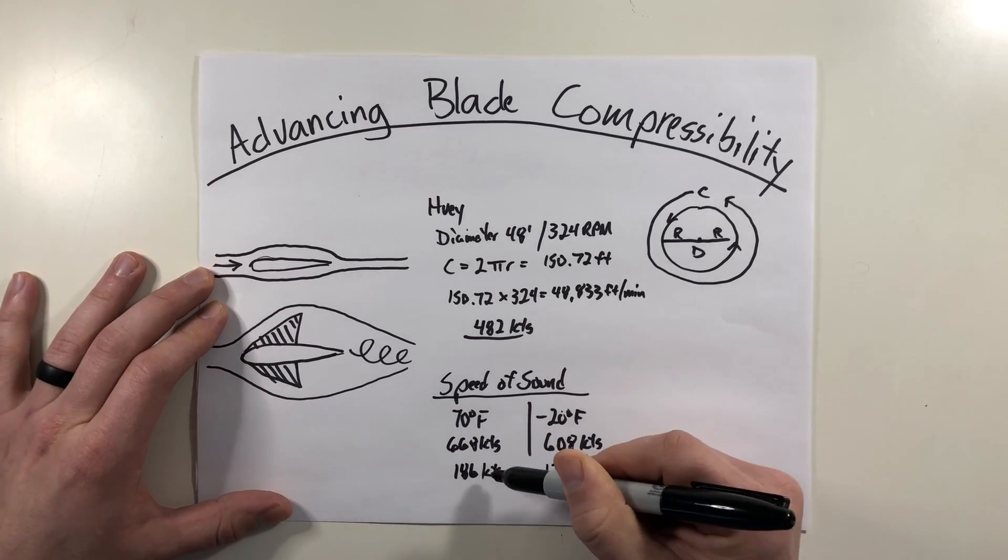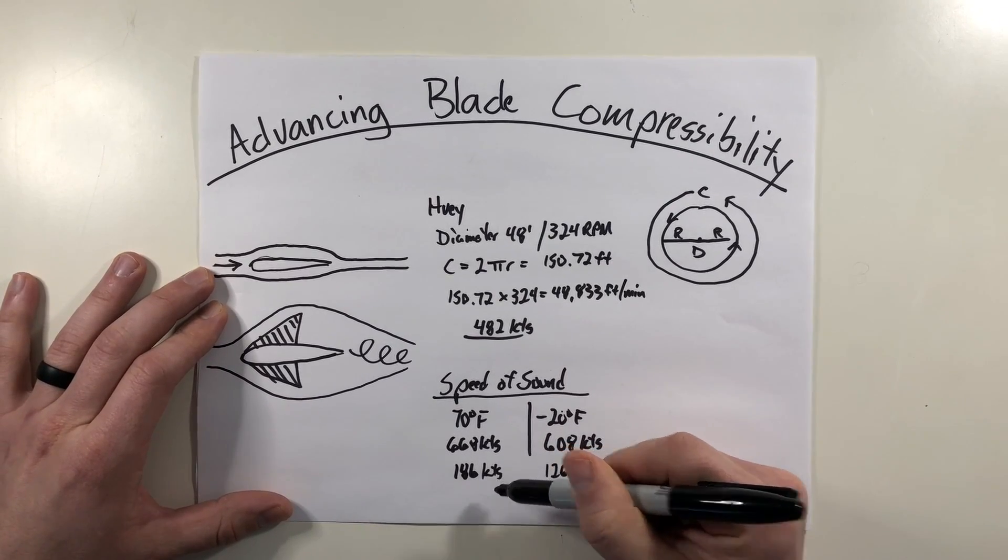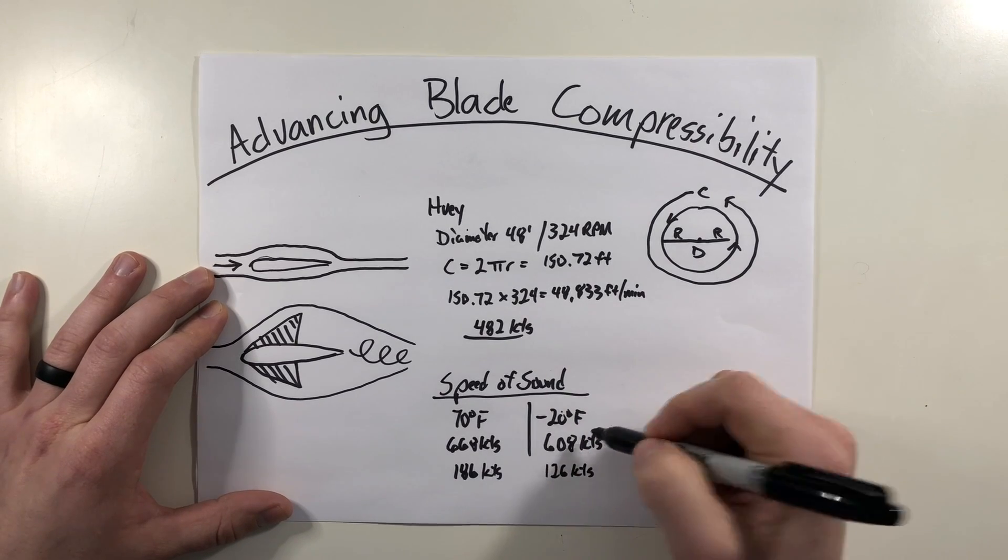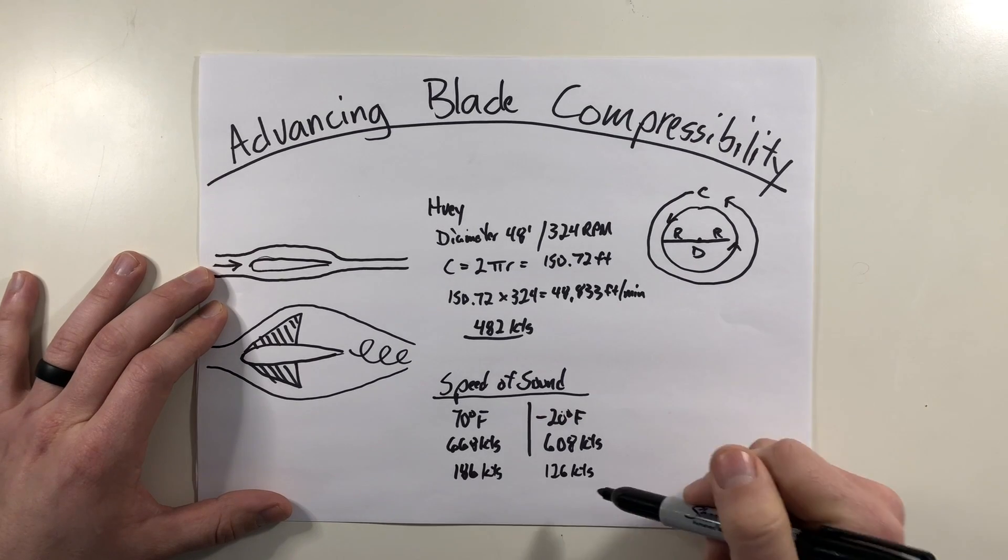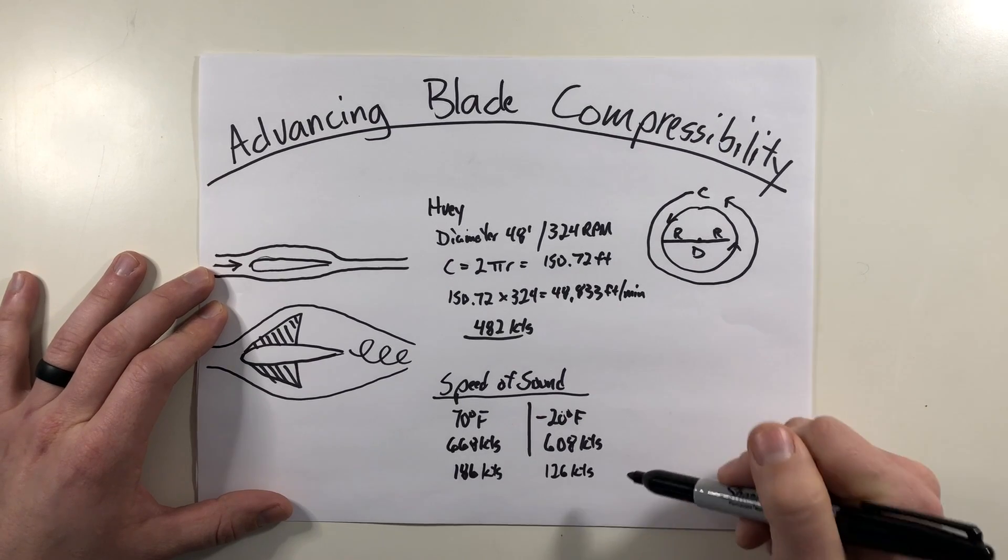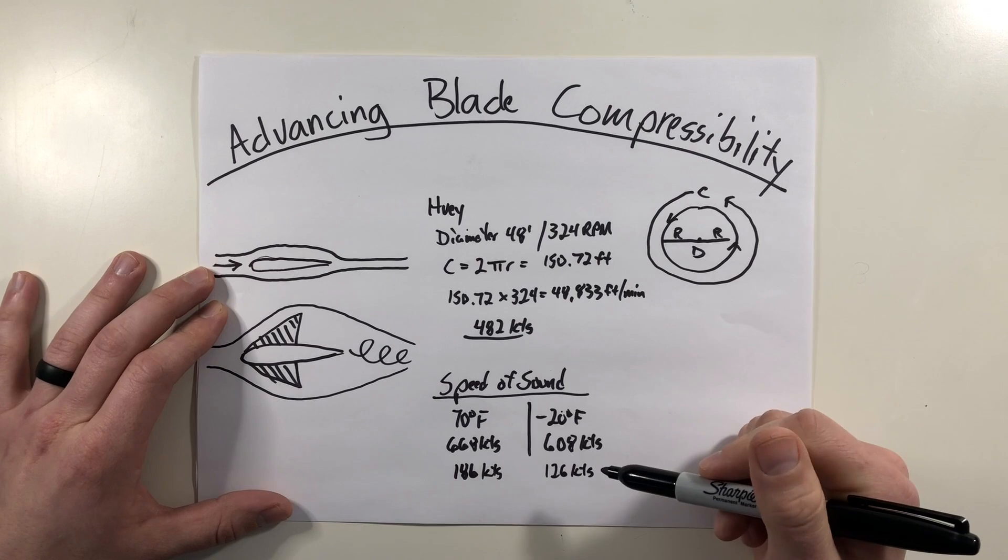So whereas at the speed of sound here, I'm probably getting closer to my retreating blade stall at these speeds, but closer to minus 20 minus 30 degrees Fahrenheit, the colder I get, it's more likely I'm getting close to advancing blade compressibility, not that retreating blade stall.